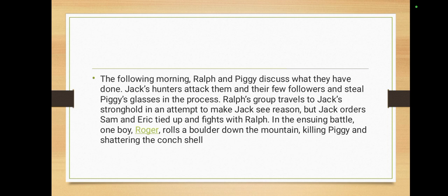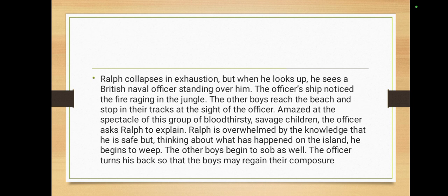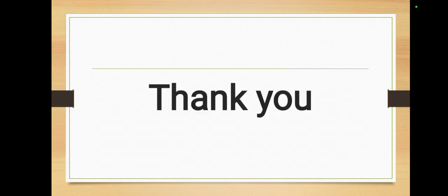Ralph collapsed in exhaustion, but when he looked up he saw a British naval officer standing before him — the officer's ship had noticed the fire raging in the jungle. The other boys reached the beach and stopped at the sight of the officer. Amazed at the spectacle of a group of bloodthirsty savage children, the officer asked Ralph to explain what had happened on the island. Ralph was overwhelmed by the knowledge that he was saved, but thinking about what had happened, he began to weep. The other boys began sobbing as well, and the officer turned his back so that the boys might regain their composure.